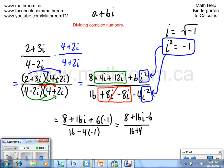Now we can put the 8 and the minus 6 together up here. So we have 2 plus 16i over 20. And now we need to create some more room here.